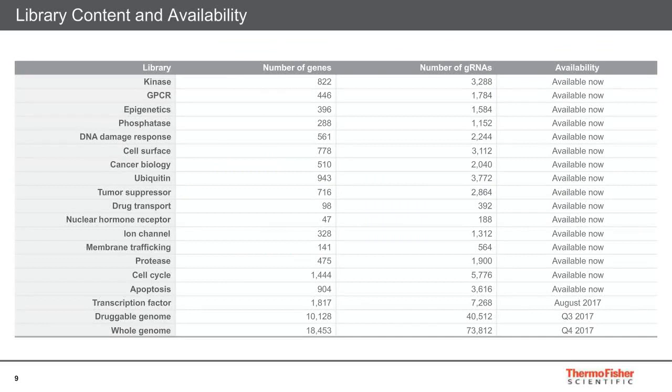What library content are you interested in? We have 17 subsets of genes shown here, all available now with the exception of the transcription factor set which we expect to roll out in about one week. The druggable genome and the whole genome are going through production now and we expect those to be completed by the end of Q3 and Q4 of this year, respectively. You can see the number of genes in each set and the number of guides, which is typically four times the number of genes.